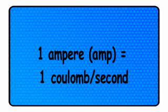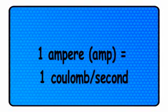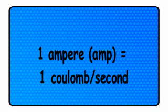It so happens that the unit for electron flow, the amp, is equal to one coulomb of electrons passing by a given point in a circuit in one second of time. And cast in these terms, current is the rate of electric charge motion through a conductor.